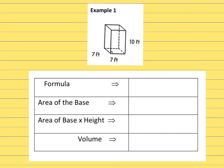Example 1 – so this one is a rectangular prism or a square prism – the bottom is a square. The first thing I'm going to do is I'm going to fill in what the formula is. Capital V equals capital BH.